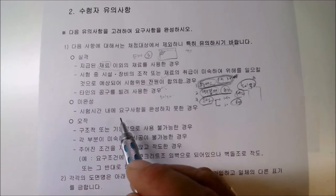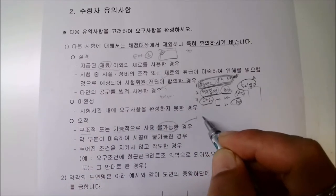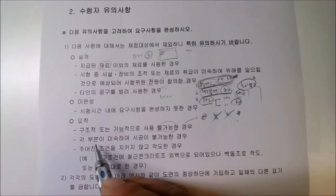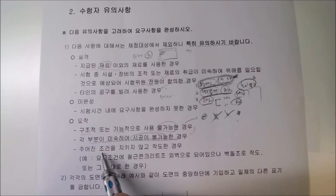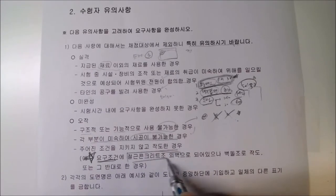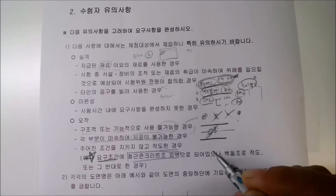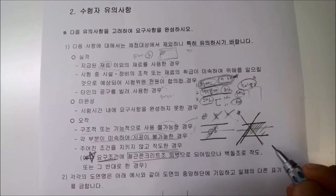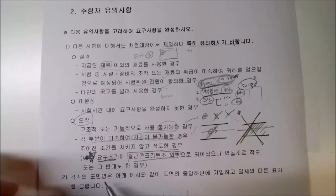미완성, 구조적·기능적으로 사용 불가능한 경우(예: 문이나 창문을 안 그린 경우), 각 부분이 미숙하여 시공이 불가능한 경우도 감점됩니다. 가장 중요한 것은 주어진 조건을 지키는 것입니다. 예를 들어 외벽을 철근콘크리트로 하라고 했는데 벽돌 해치로 했다면 오답 처리됩니다.